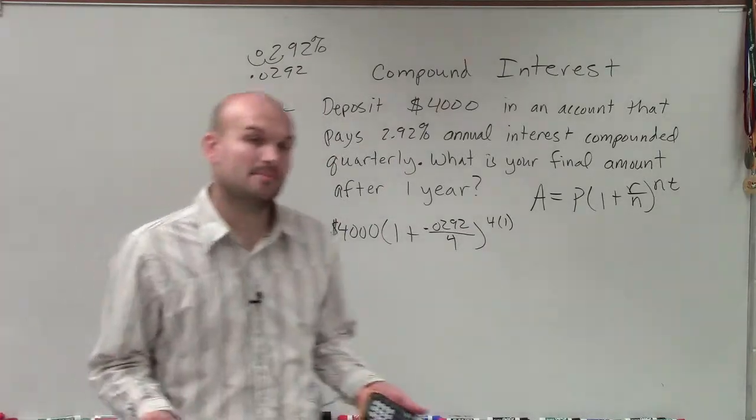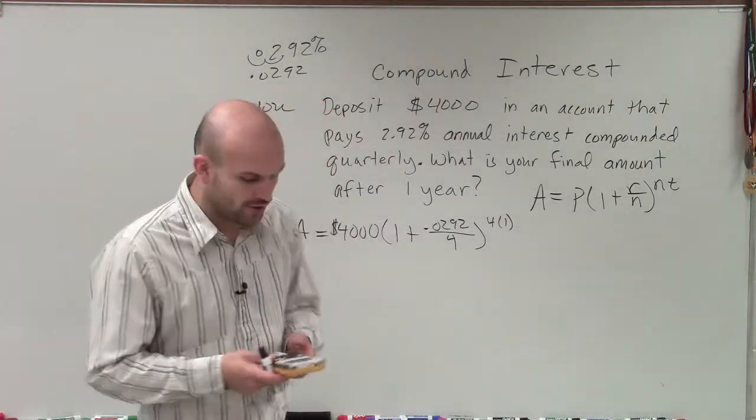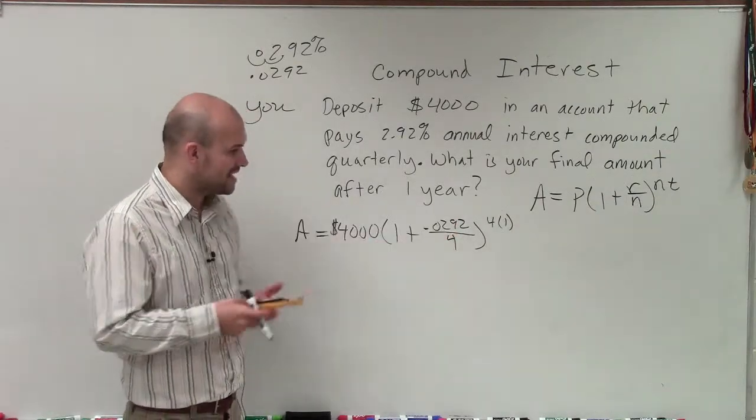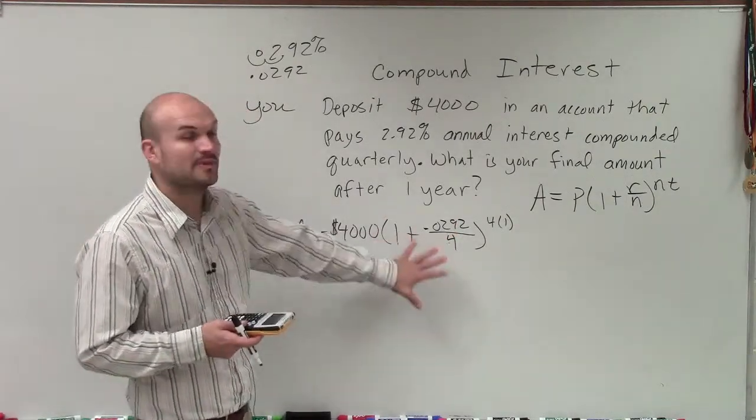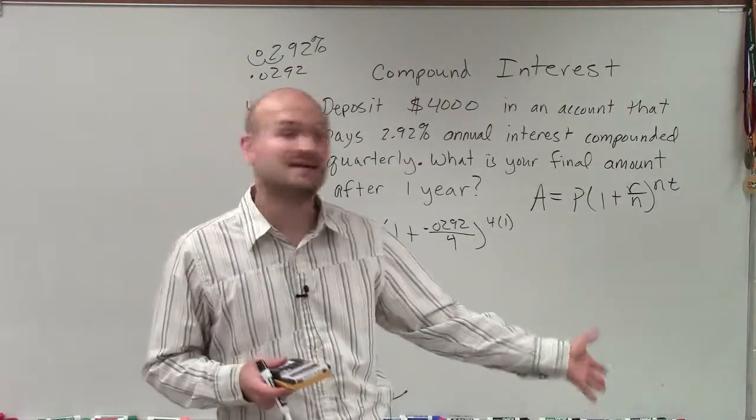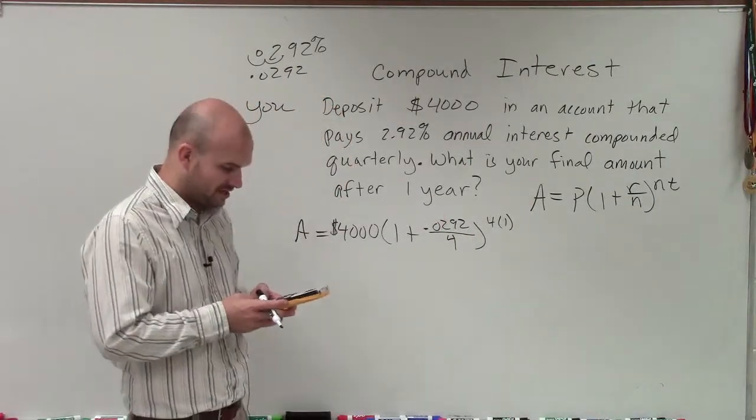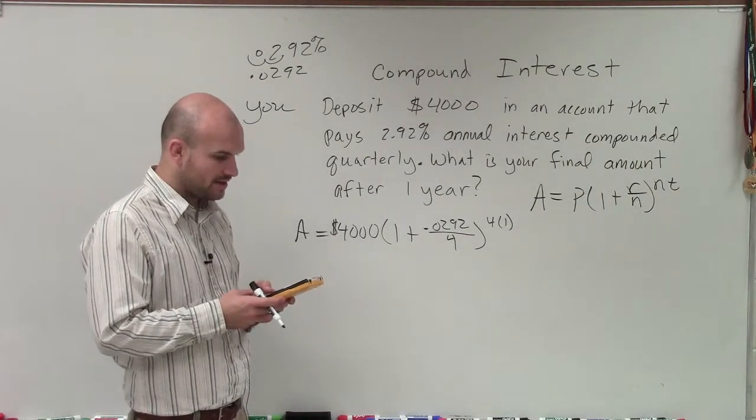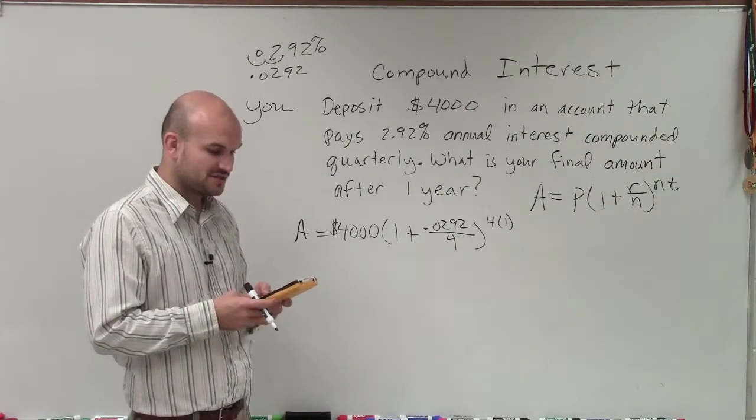Now we apply order of operations. I'll do the operations inside the parentheses first, following order of operations there as well. So I'll take 0.0292 divided by 4, which gives me 0.0073.